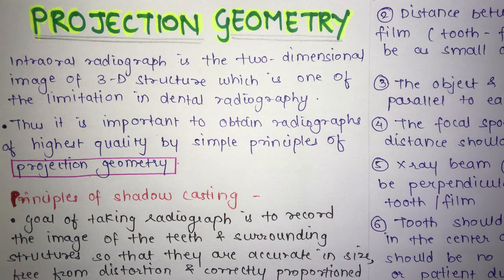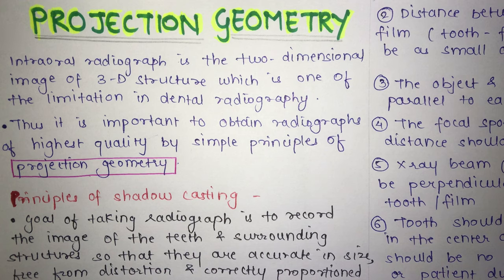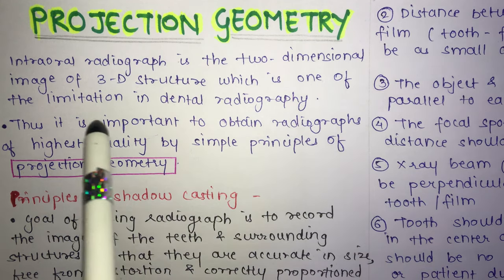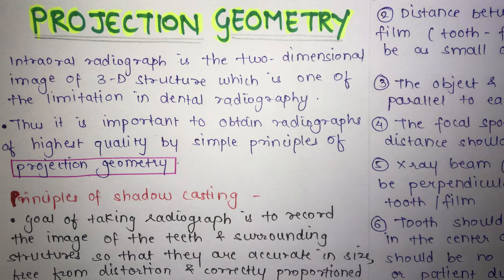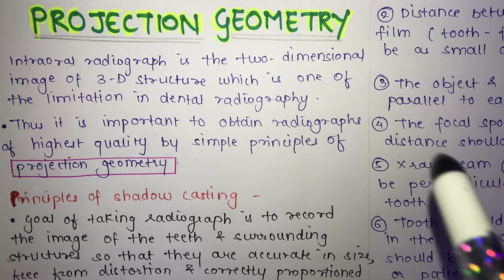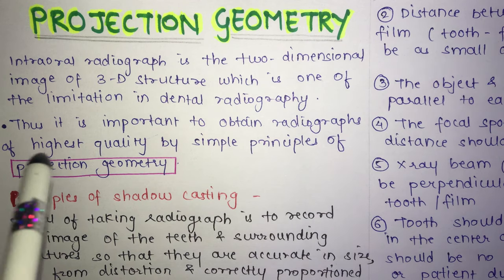The topic for today is projection geometry from oral radiology. This is a very important topic from your oral radiology and from your exam point of view. Intraoral radiographs are two-dimensional images of a three-dimensional structure, which is one of the limitations in dental radiography. Because of this limitation, we perform object localization.